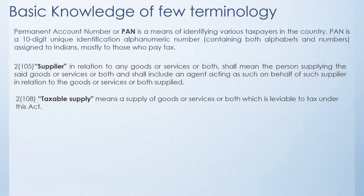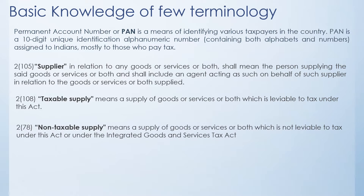Then, taxable supply means the supply of goods or services or both which are liable to tax, and the tax rate has been prescribed which varies from 0% to 28% plus cess. The non-taxable supply means the supply of goods or services which are not liable to tax under this act or under the IGST.